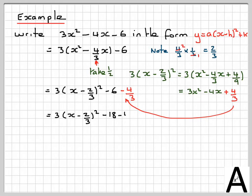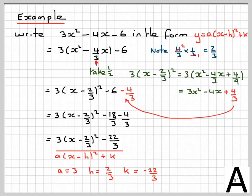So this gives me 3 brackets x minus 2 over 3 all squared. 3 times 6 gives me 18 over 3 minus 4 over 3, which is going to give me 3 brackets x minus 2 over 3 squared minus 22 over 3. A brackets x minus h all squared plus k. Therefore in this case a is 3, h is 2 over 3, and k is minus 22 over 3.